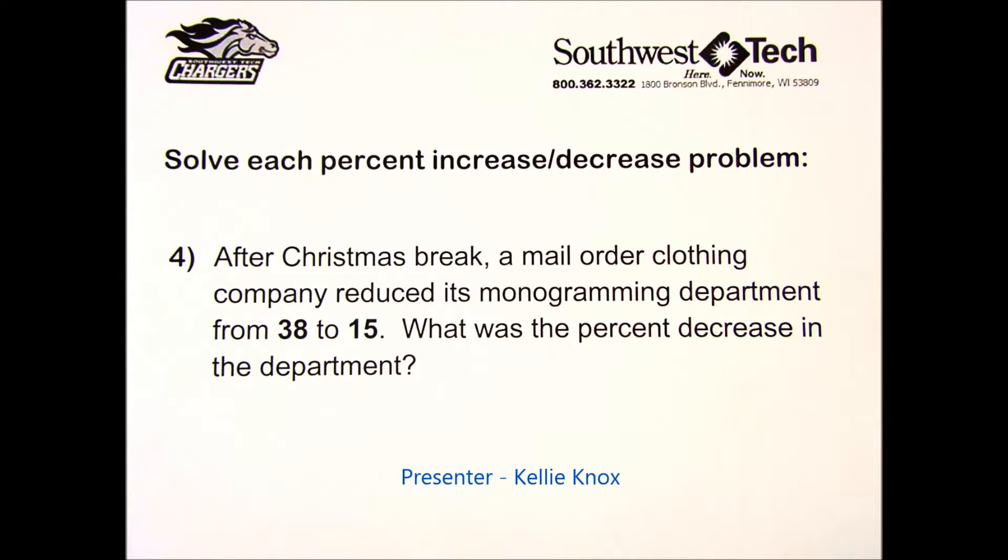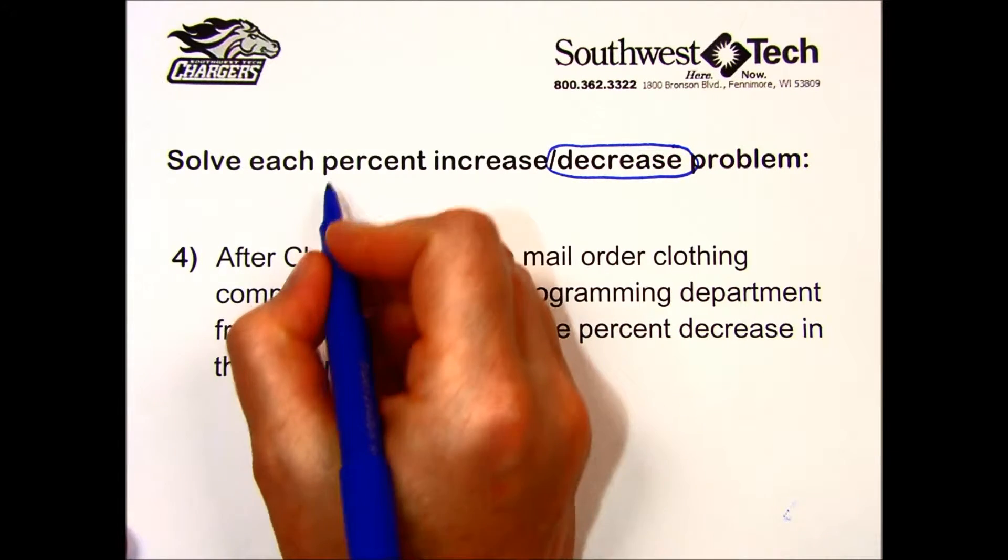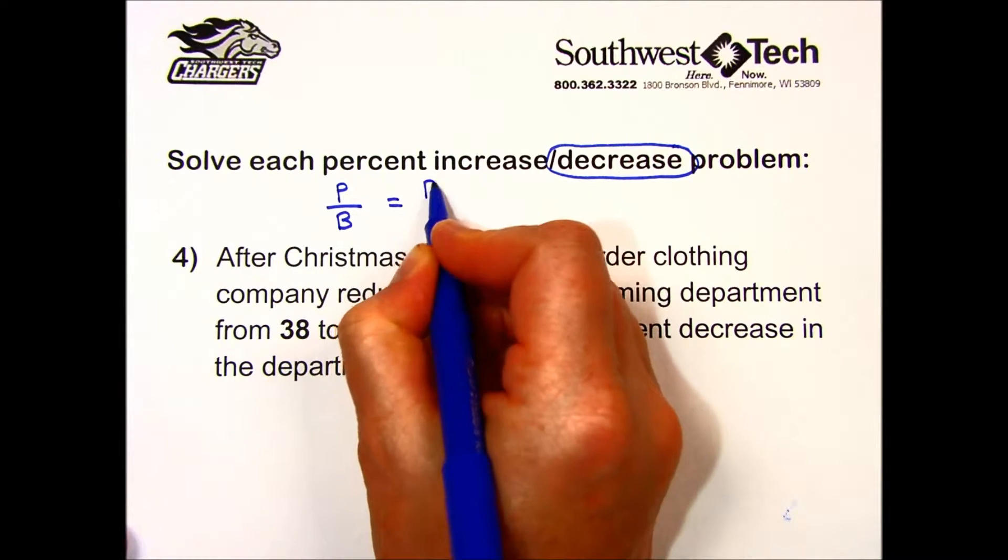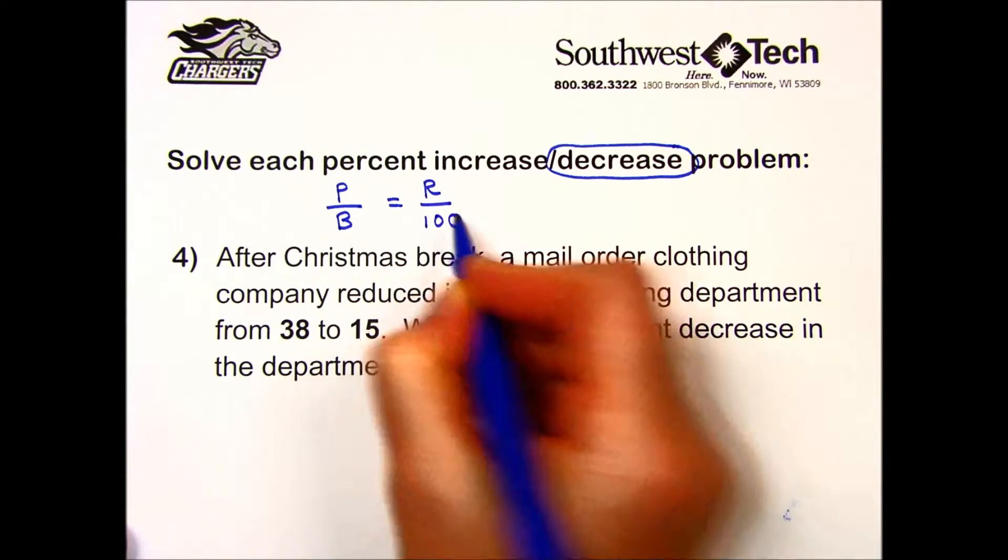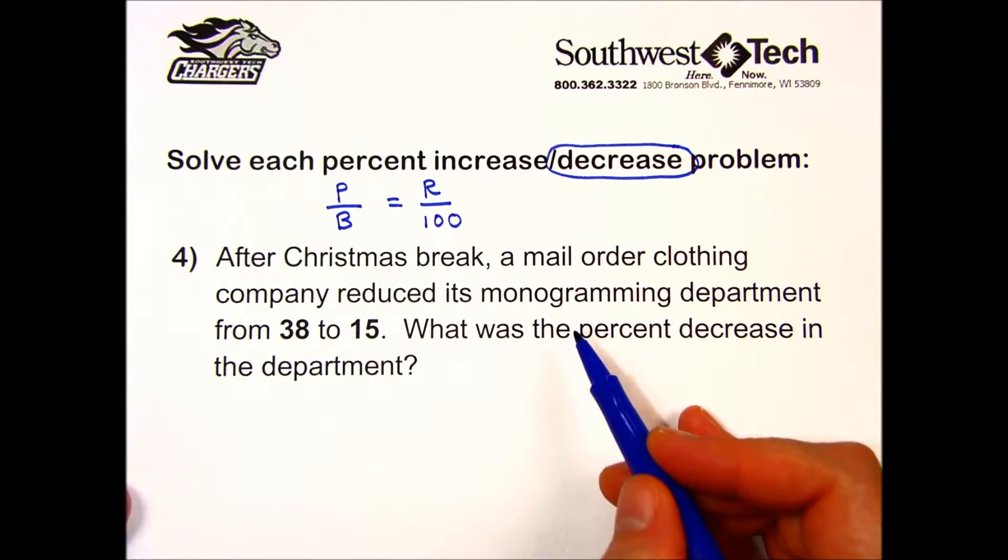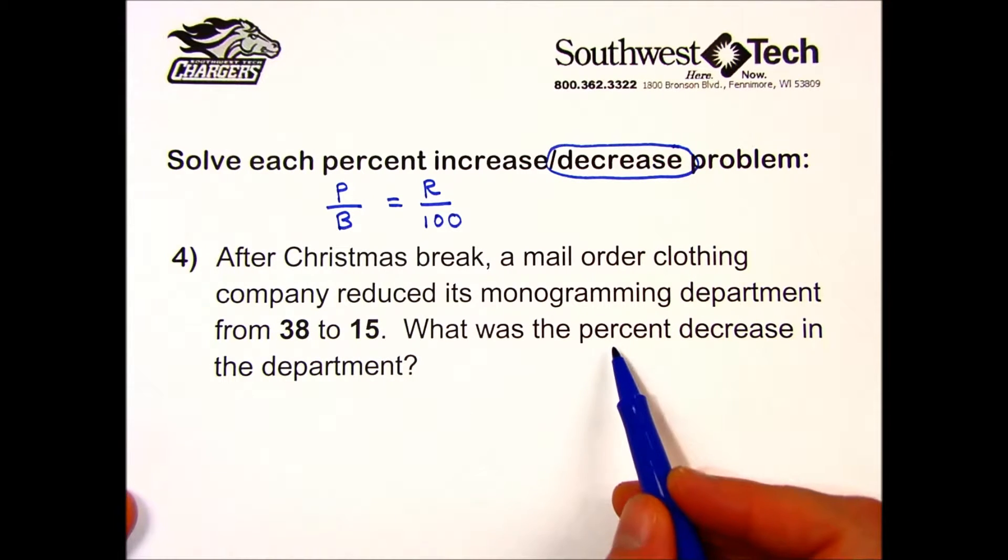Practice set 3-6 involves percent increase and decrease problems. Let's look at two problems that involve a decrease, and we will use our formula: part over base equals rate over 100. Number 4: After Christmas break, a mail order clothing company reduced its monogramming department from 38 to 15. What was the percent decrease in the department?